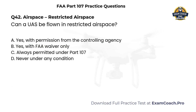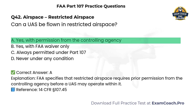Airspace — Restricted Airspace. Can a UAS be flown in restricted airspace? A. Yes, with permission from the controlling agency. B. Yes, with FAA waiver only. C. Always permitted under Part 107. D. Never under any condition. Correct answer: A. Yes, with permission from the controlling agency. The FAA specifies that restricted airspace requires prior permission from the controlling agency before a UAS may operate within it.